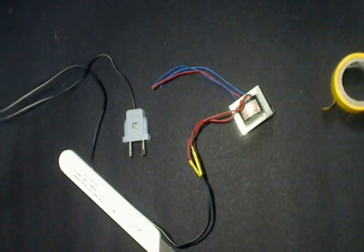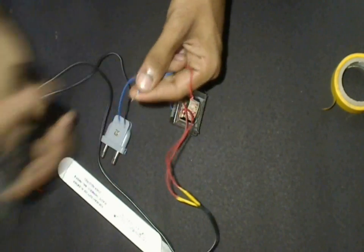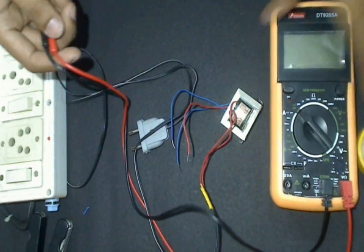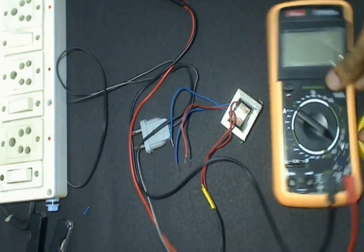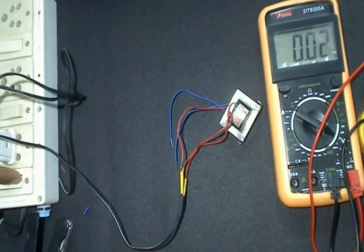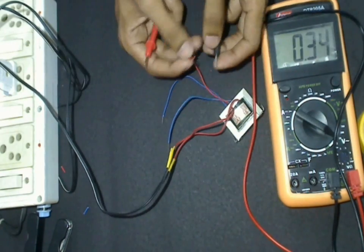Now strip the output ends of the transformer. Now let's test the output of the transformer. You should be getting around 24 volts across the two extreme blue wires.